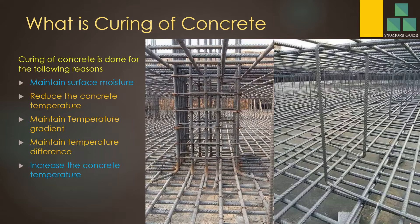So we discussed three things: first, we have to reduce the concrete temperature and keep it below 70 degrees; second, we have to maintain the temperature gradient at about 20 degrees; third, we have to maintain the temperature difference between core and surface at about 25 degrees. These three things we have to do — and this is achieved through curing.